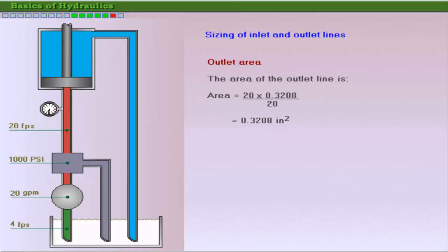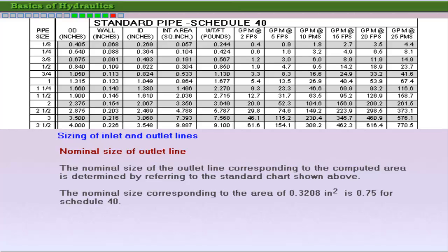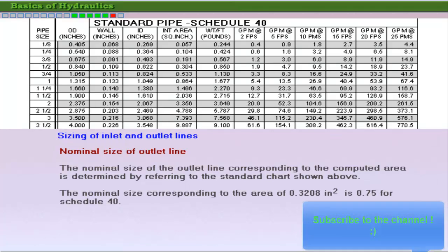The area of the outlet line is calculated. The nominal size and the schedule number of the pipe corresponding to the calculated area is found by referring to the steel pipe characteristics chart in the Lightning Reference Handbook. The minimum nominal size for the outlet line corresponding to the computed area is 3/4 of an inch for Schedule 40.